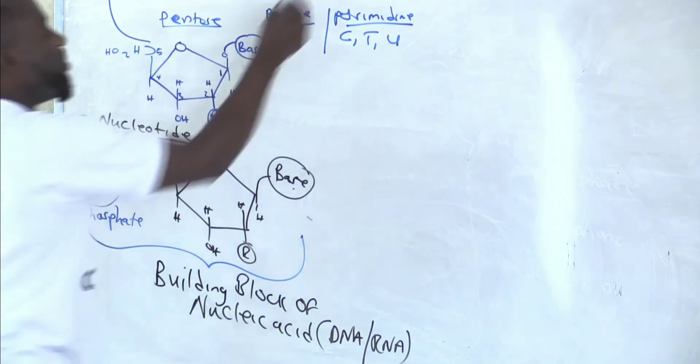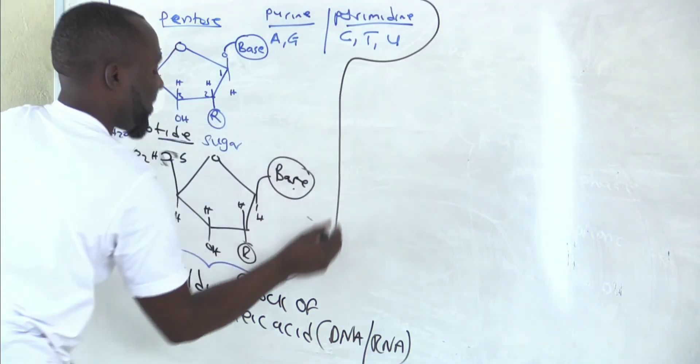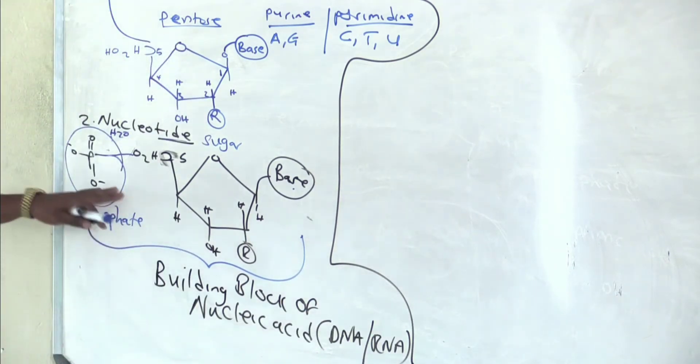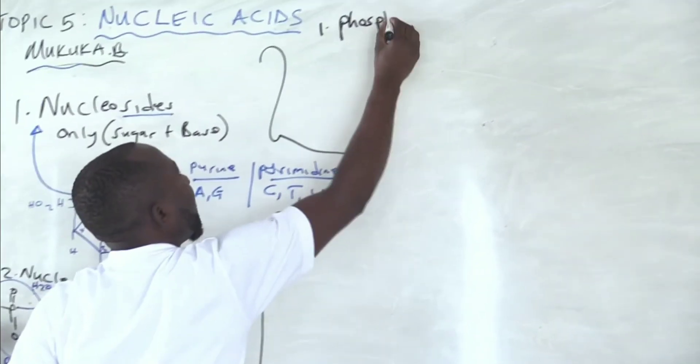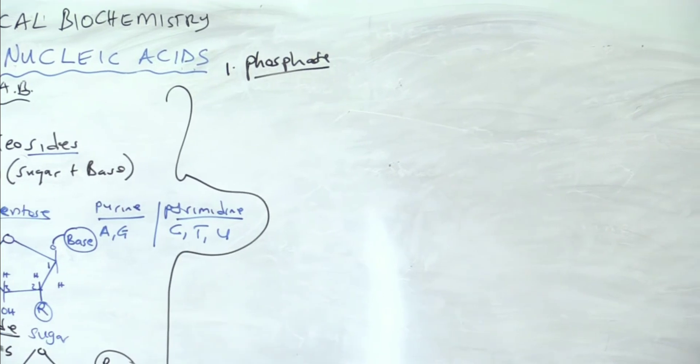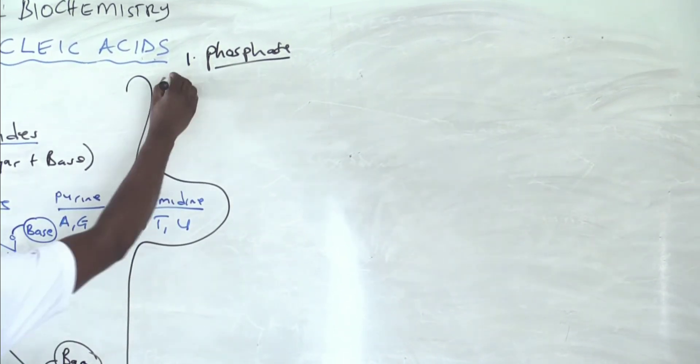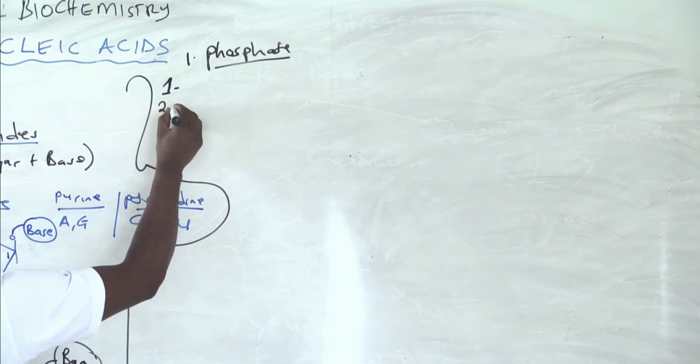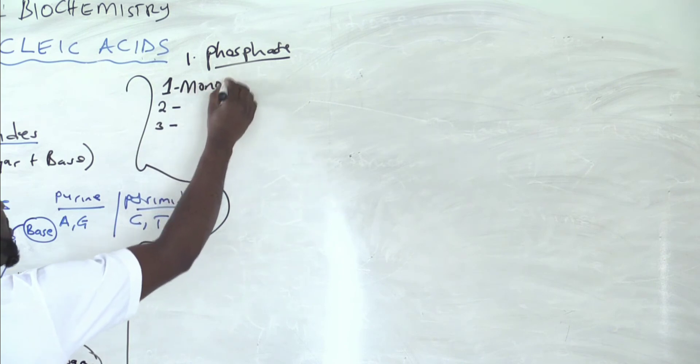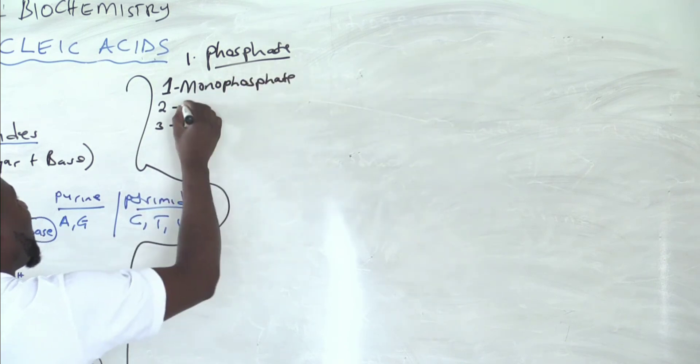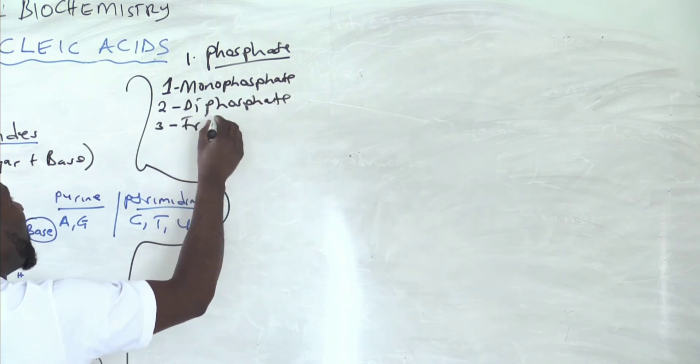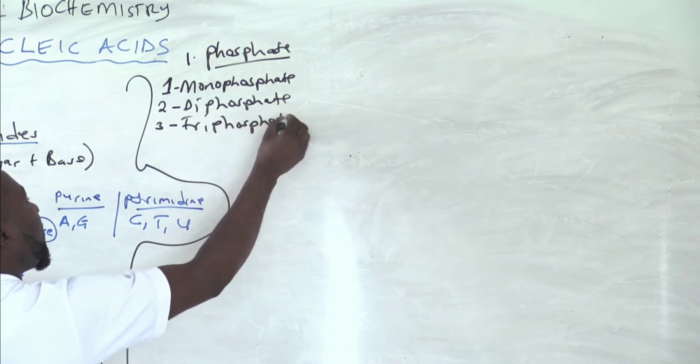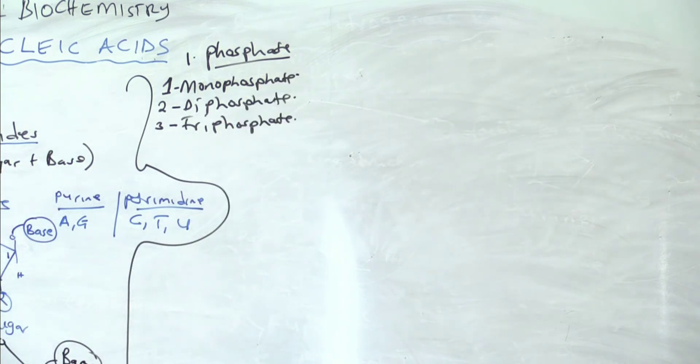Now, what are the important things that I want you to capture about this structure? For a phosphate, let us start with a phosphate. You can decide to attach one phosphate, you can decide to attach two or three. When you attach one, we call it monophosphate. You attach two, diphosphate. You attach three, triphosphate.